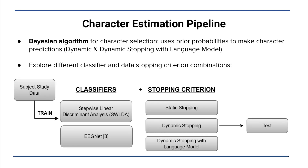For target character estimation, we used the Bayesian algorithm, a probabilistic character scoring function. We explored various combinations of classifier and stopping criterion. The classifier options include stepwise linear discriminant analysis, a traditional machine learning model.